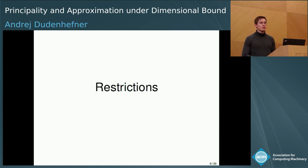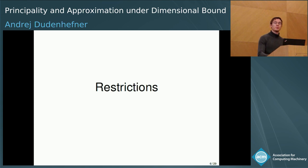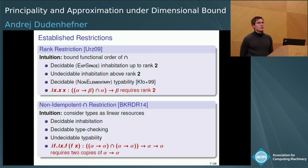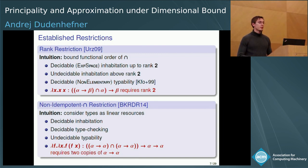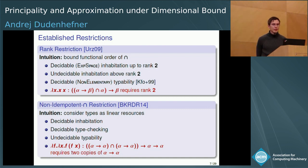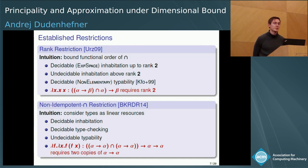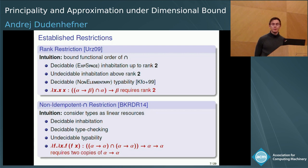This talk will be about several restrictions of intersection types and what you can start thinking about once several of the properties become maybe decidable or feasible to work with. There exist many restrictions of intersection type systems, and here are two of the most prominent: the rank restriction and the non-idempotent intersection type restriction. The rank restriction came up today during some talk — not for intersection types but for polymorphism — and non-idempotency came up in the last talk, so those two restrictions are among the more important ones.